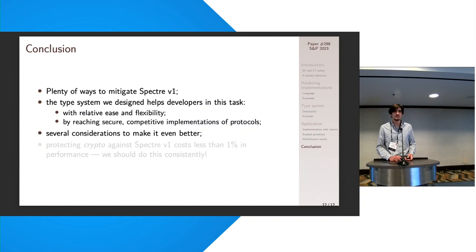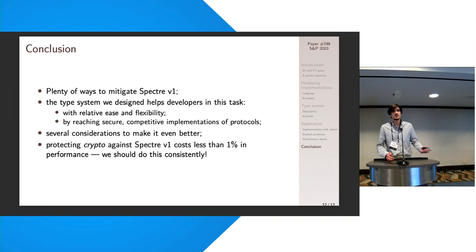And it's also important to highlight that this gives both secure implementations, but also competitive ones with very low overhead. And there are, of course, plenty of things to say about the type system itself and how it could be improved, so giving rise to potentially future work. But again, it's important to say that this is kind of a proof that protecting against Spectre v1 in cryptographic implementations costs about less than one percent in performance. And this is definitely a call to doing this consistently. Thank you for your attention, and I'd be happy to take your questions.